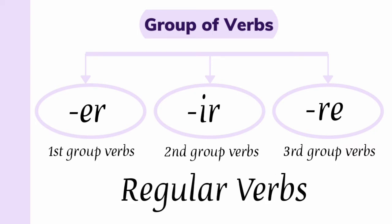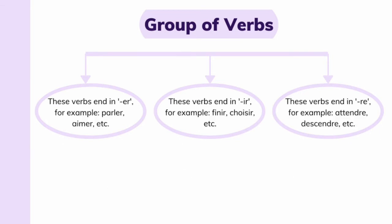They are called regular verbs which follow a certain pattern of conjugation. ER verbs are the ones which end in ER. For example, parler, aimer, adorer, etc.